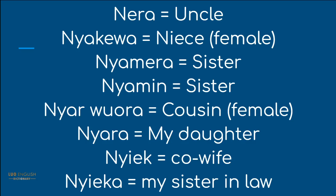Nyarwora — that's a cousin, specifically a female cousin. Nyarwora. Nyara — my daughter. Nyara. Nyeka — my co-wife or my sister-in-law. So your co-wife is called Nyeka, and your sister-in-law is also called Nyeka.